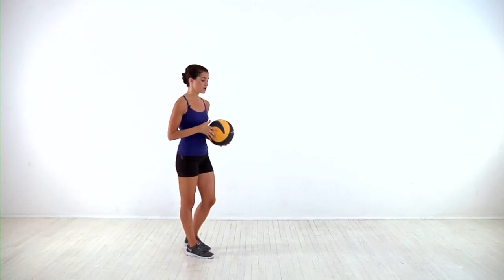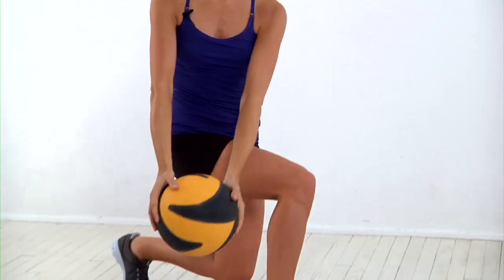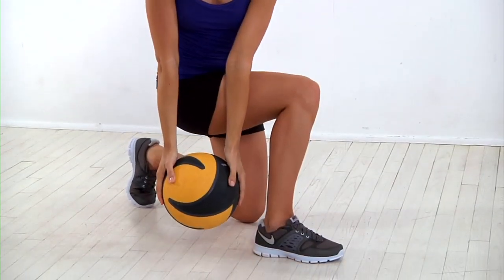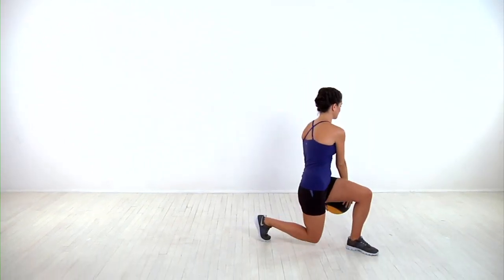If it's too easy, you can complete the same move but lower deeper into your lunge, trying to bring the ball almost all the way towards the ground. Then stand and move forward with each rep.